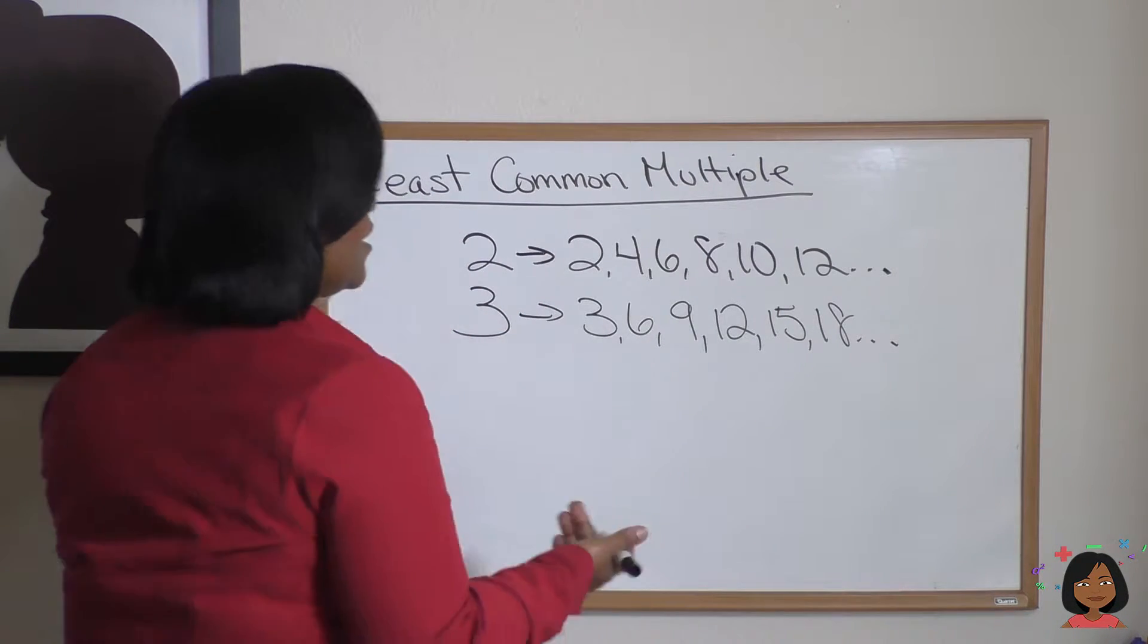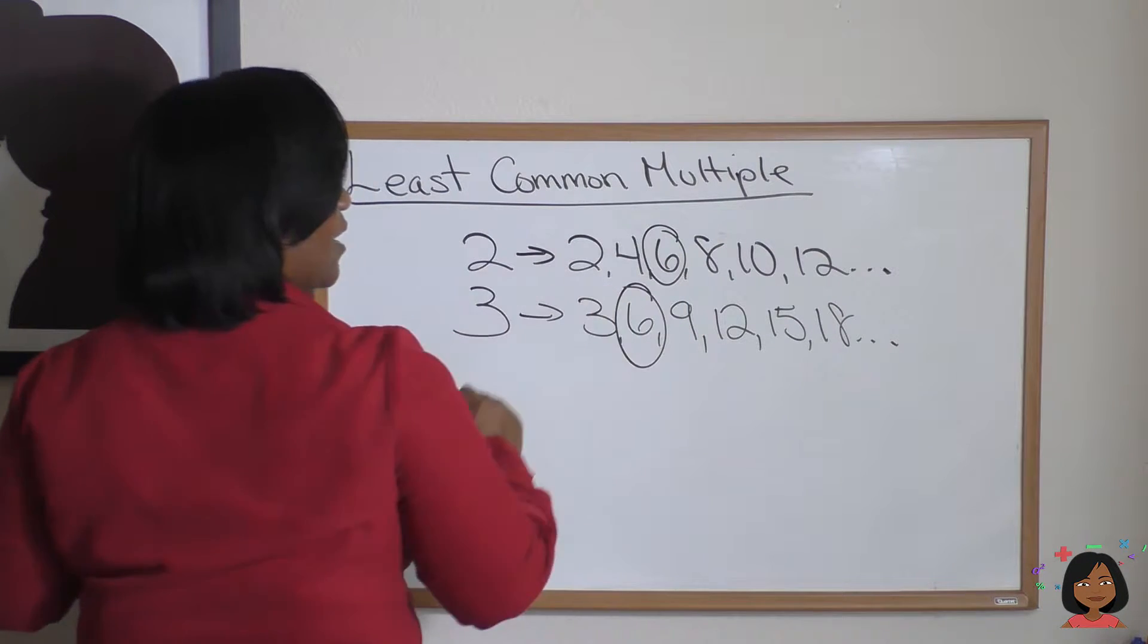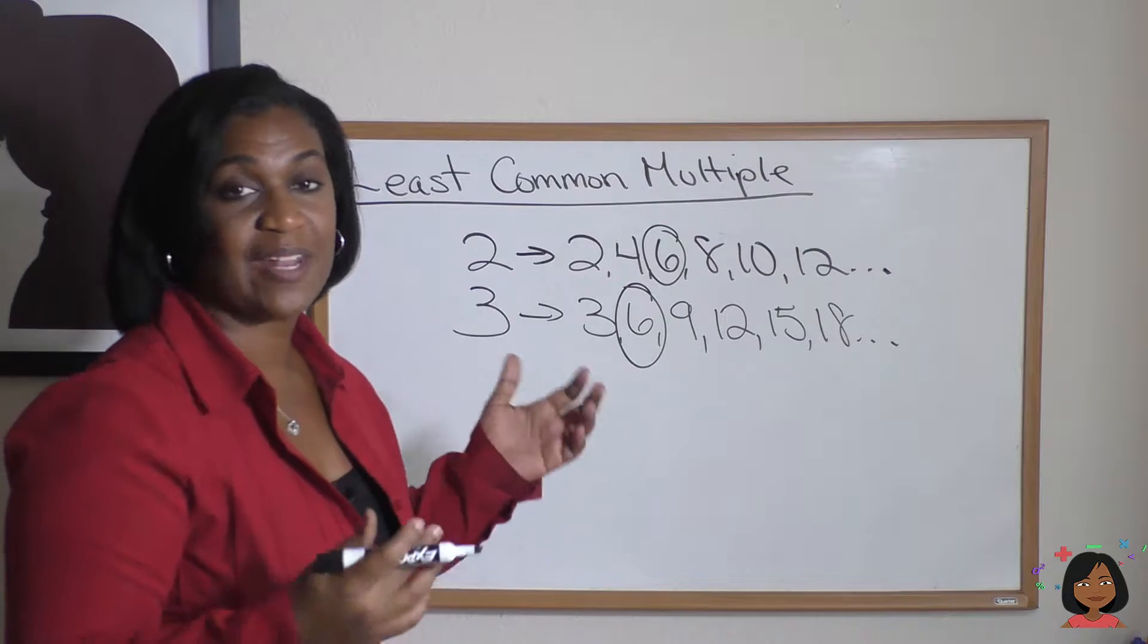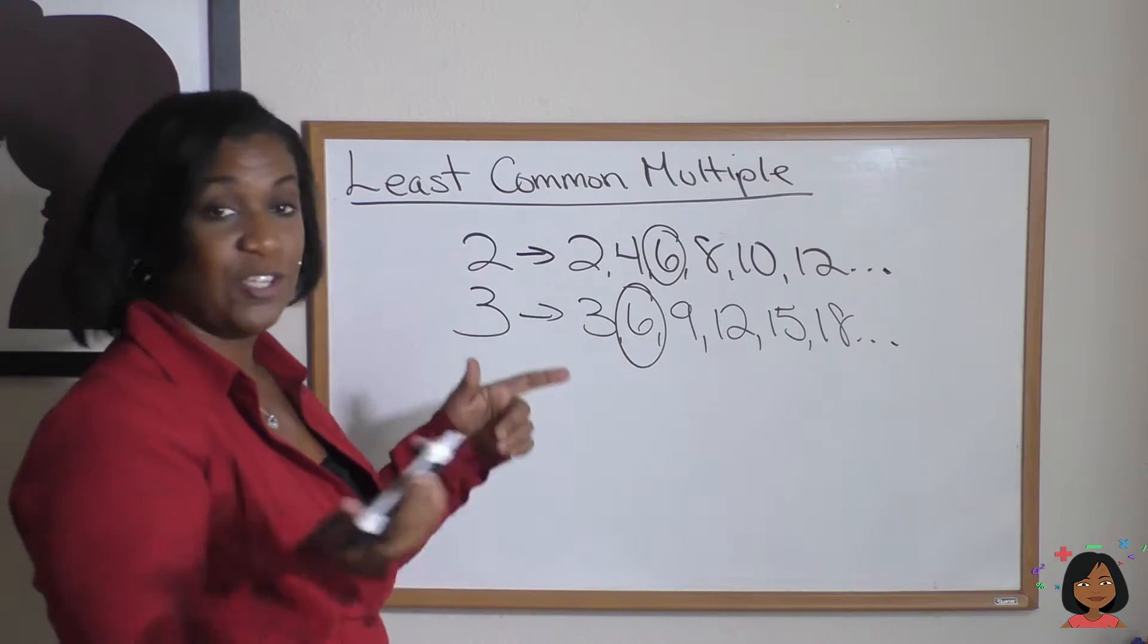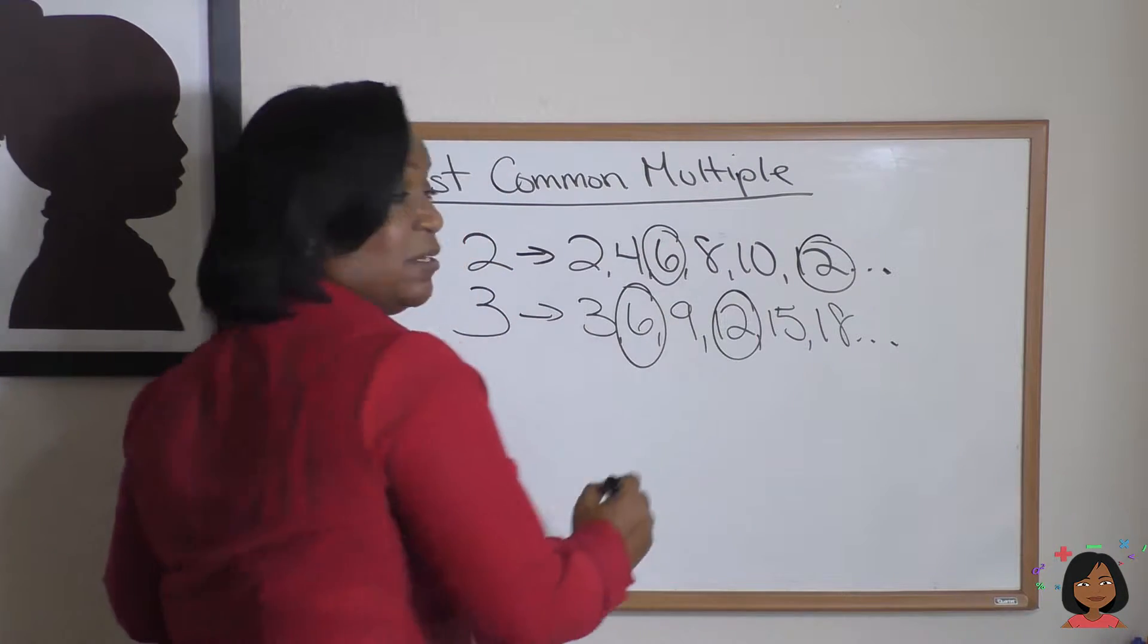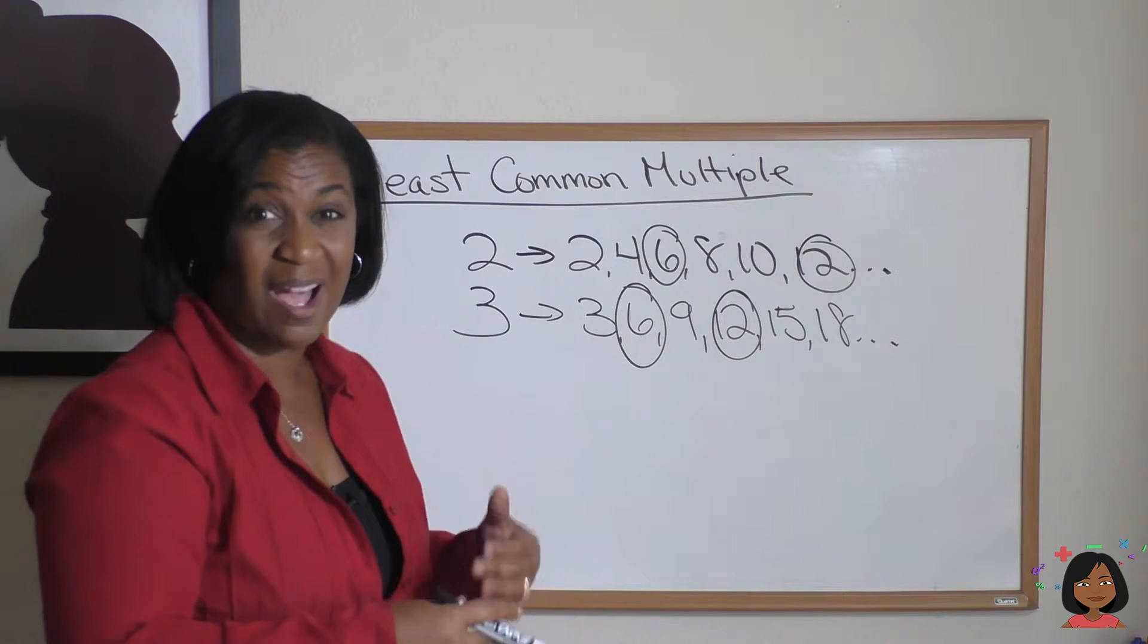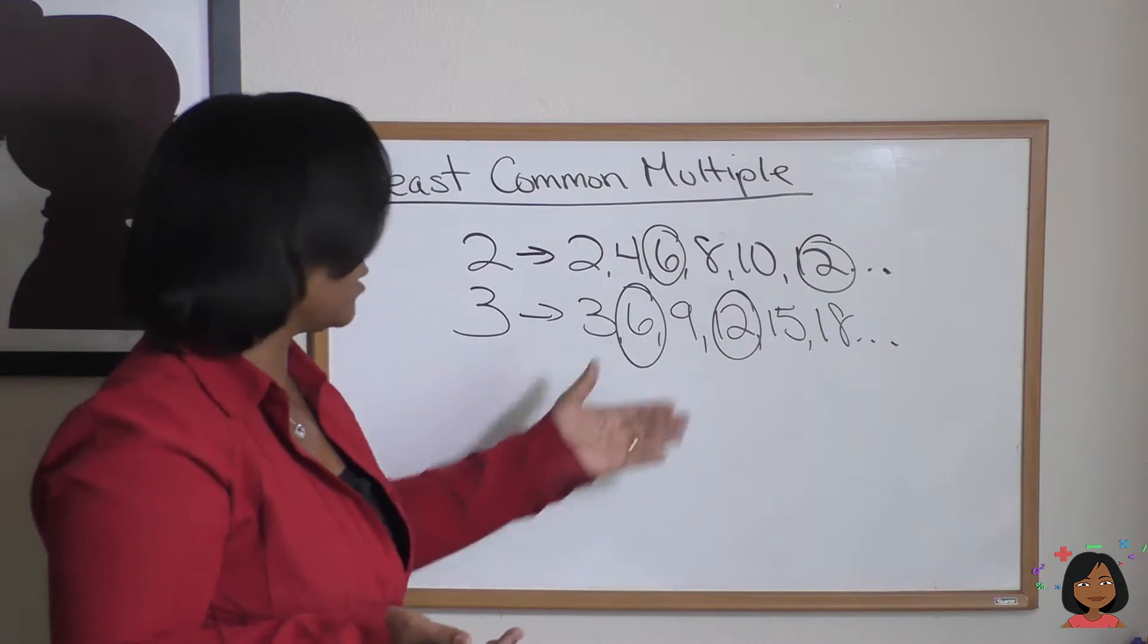Ah, there we go—the number six. That is the least common multiple that appears in both of these lists. Now you might notice that twelve also appears, and that would be true—it's another common multiple. But is it the least? No, the least one, the smallest one, is the six.